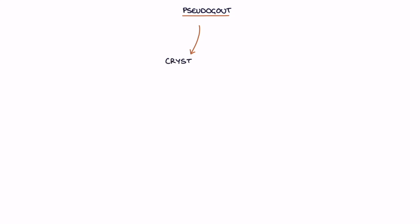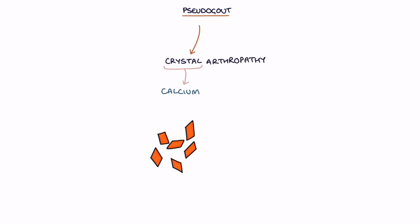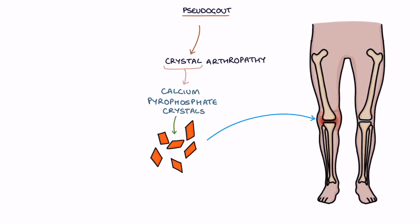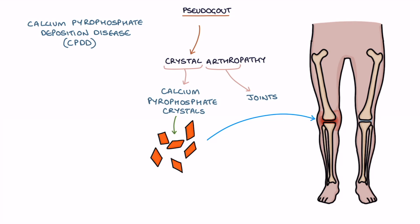Pseudogout is a crystal arthropathy caused by calcium pyrophosphate crystals collecting in the joints. It's formerly known as calcium pyrophosphate deposition disease, or CPPD. It may also be called chondrocalcinosis.